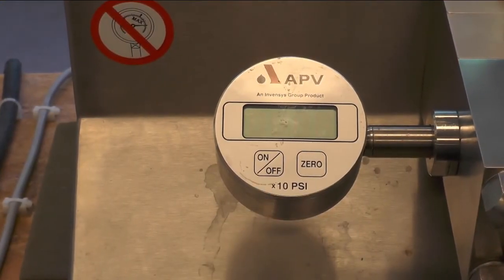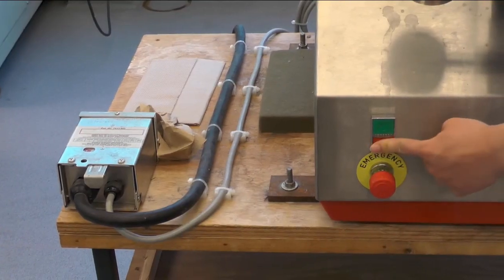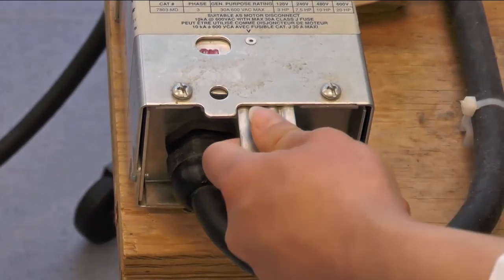To shut down, first turn off the pressure gauge. Then the red power button and pull the power box lever out.